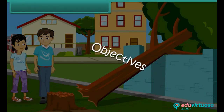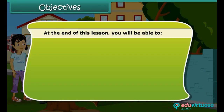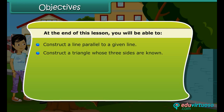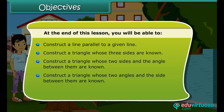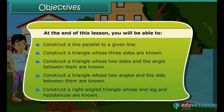Objectives: At the end of this lesson, you'll be able to construct a line parallel to a given line; construct a triangle whose three sides are known; construct a triangle whose two sides and the angle between them are known; construct a triangle whose two angles and the side between them are known; and construct a right angled triangle whose one leg and hypotenuse are known.